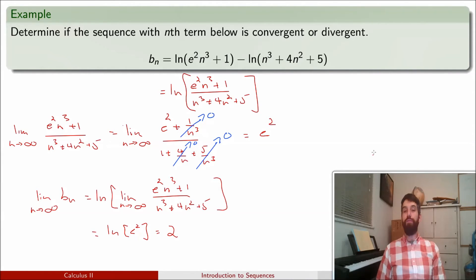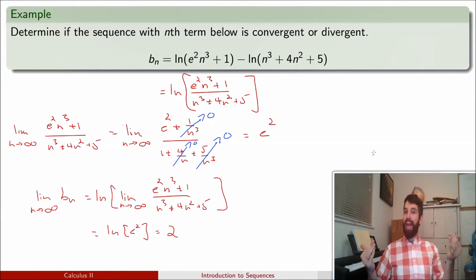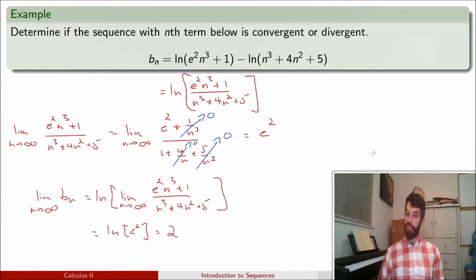You would have never guessed the answer was going to be 2. We had to use a bunch of little rules to manipulate things, just as we would have done with a messy limit in x back in Calculus 1. In truth, this short list of rules is going to allow us to figure out the convergence or divergence of an enormous number of sequences.